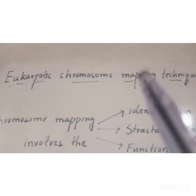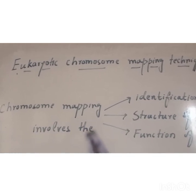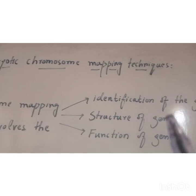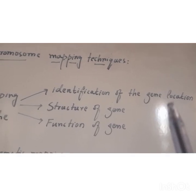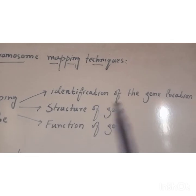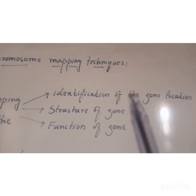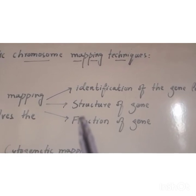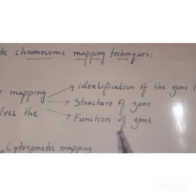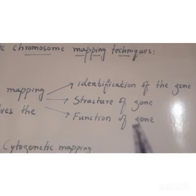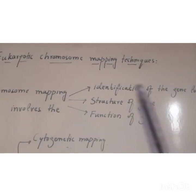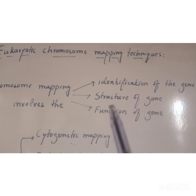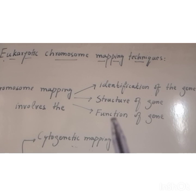Eukaryotic Chromosome Mapping Techniques. Chromosome mapping techniques involve the identification of genes located on the chromosome, identifying the locus of a gene on the chromosome, its structure, and its function. Chromosome mapping हम use करते हैं gene के locus की identification के लिए, उसके structure की identification के लिए और उसके functions की identification के लिए।